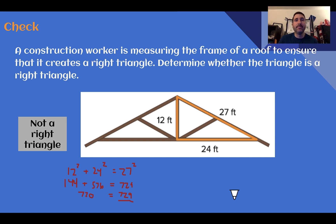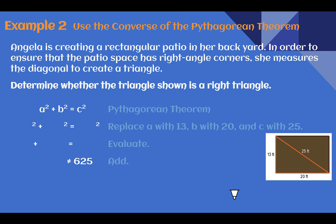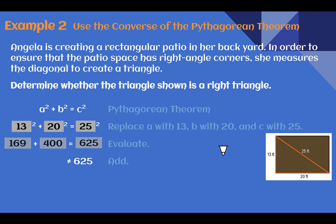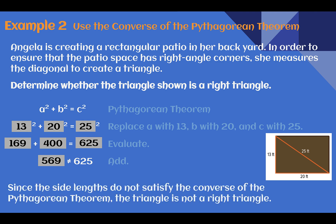Example 2: Use the Converse of the Pythagorean Theorem. Angela is creating a rectangular patio in her backyard. In order to ensure that the patio space has right angle corners, she measures the diagonal to create a triangle. Determine whether the triangle shown is a right triangle. Is a squared plus b squared equal to c squared? 13 and 20 were our legs, 25 was our hypotenuse. Squaring those: 169 plus 400 — is that equal to 625? We end up with 569, which is not equal to 625. Since the Pythagorean Theorem was not true, the triangle she made is not a right triangle.